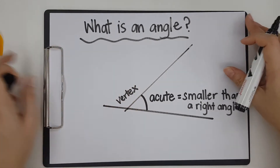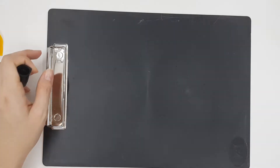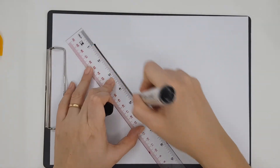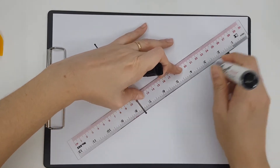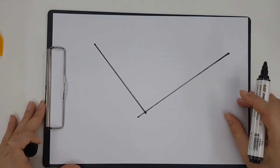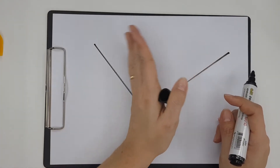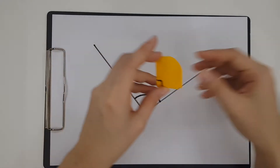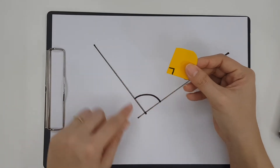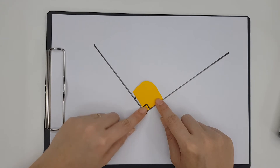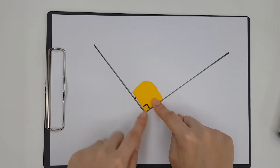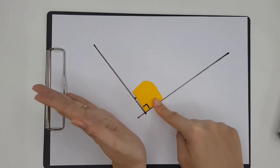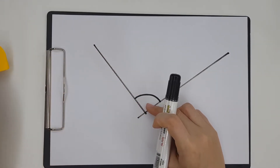Now let's look at the second angle. I have two lines — one line here and one line there. Remember, they meet at the point called a vertex. The angle is the amount of turning from here all the way to there, and I'm going to mark it out with a curve. Let me compare this angle to a right angle — I'm going to put the corner at the vertex and align one of the sides with one of the lines. As you can see, the second line is not blocked by our paper right angle, meaning we are turning more than a right angle.